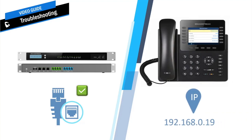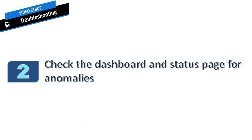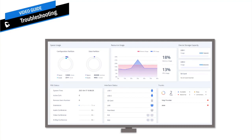All Grandstream IP phones show the IP address under the network status page. It is always recommended to monitor the device dashboard or status page for any anomalies — it is one of the first things that you need to look at when you run into an issue. For example, the UCM includes a dashboard which helps you get a clear picture of how the system is running in real time. It displays snapshots of the UCM overall performance.